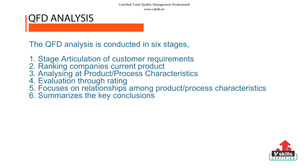In the second step, the company's current product is ranked against the competitors. The third step focuses on the product and process characteristics — in other words, the house of meeting the customer requirements. The fourth step deals with rating, in which the customer relates customer and technical requirements with ratings such as high, moderate, low, and no correlation.